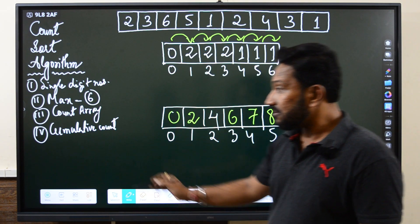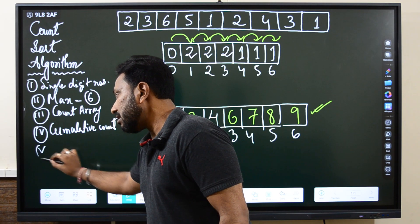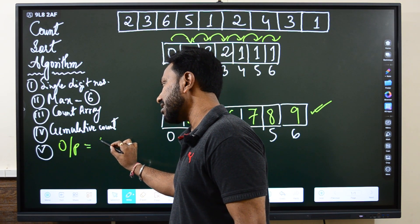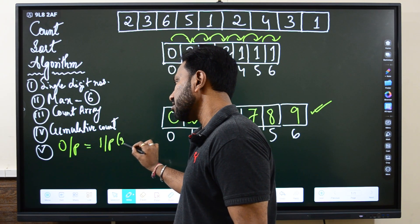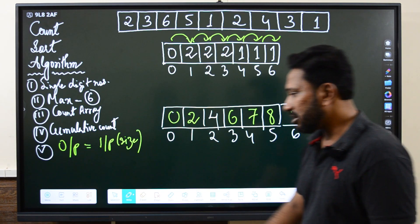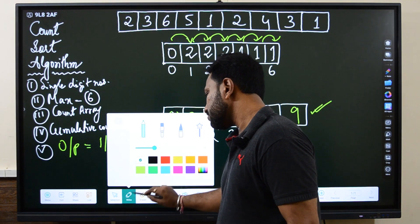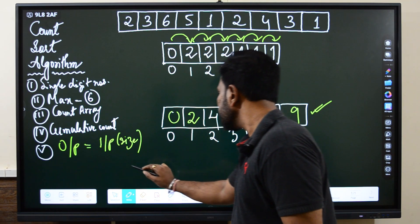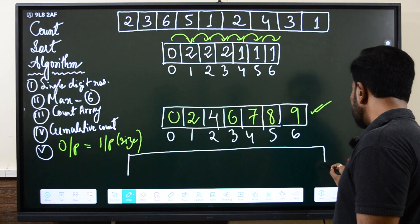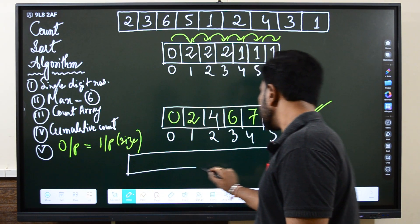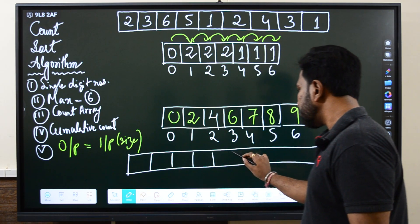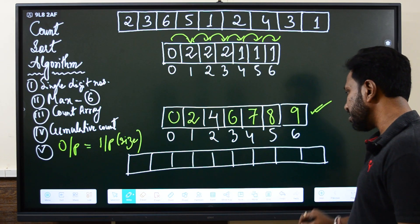After that we have to create the output array where we will store the results, and the size will be exactly equal to the input. So let us create the output array: 0, 1, 2, 3, 4, 5, 6, 7, 8.